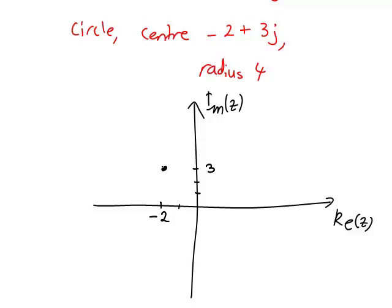That's the center of our circle. Radius 4 means horizontally, -2 + 4 extends to +2, and -2 - 4 extends to -6. Vertically, 3 + 4 extends up to 7j, and 3 - 4 extends down to -j.